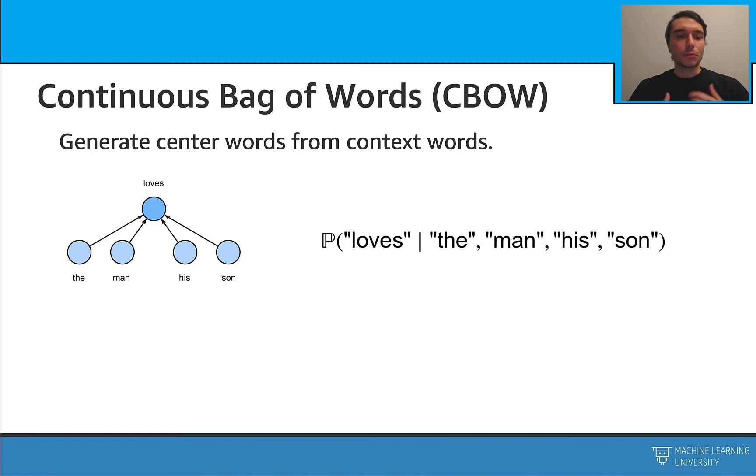There is also another way of calculating these word vectors, which is called continuous bag of words. In this one, we do the reverse thing. This time we use the context words to predict the center word. In this case, we write down the probability like this. What is the probability of seeing the word center, given that we see the words the man, his son, around it?